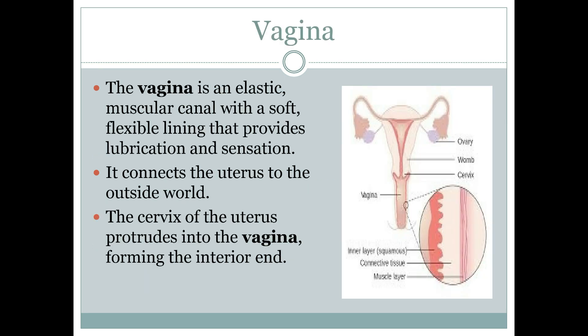The last organ of the female reproductive tract is the vagina. It is a muscular canal with the property of elasticity, which makes it flexible to serve the purpose of lubrication and as an exit door for the baby. Histologically, it also has three layers: the inner layer is made up of squamous epithelial tissue, beneath it is a layer of connective tissue, and the outermost layer is a muscle layer responsible for its flexibility and for expelling the baby.